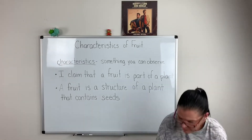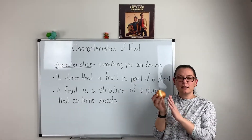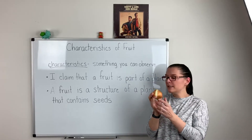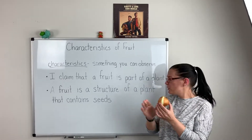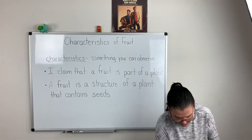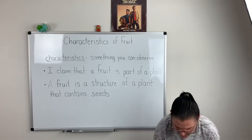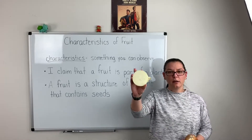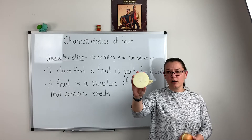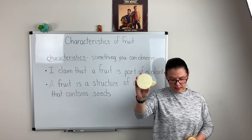I have my onion. This is definitely a vegetable. It is not a fruit because a fruit is a structure of a plant that contains seeds. When I cut my onion open you can see that there are zero seeds inside.